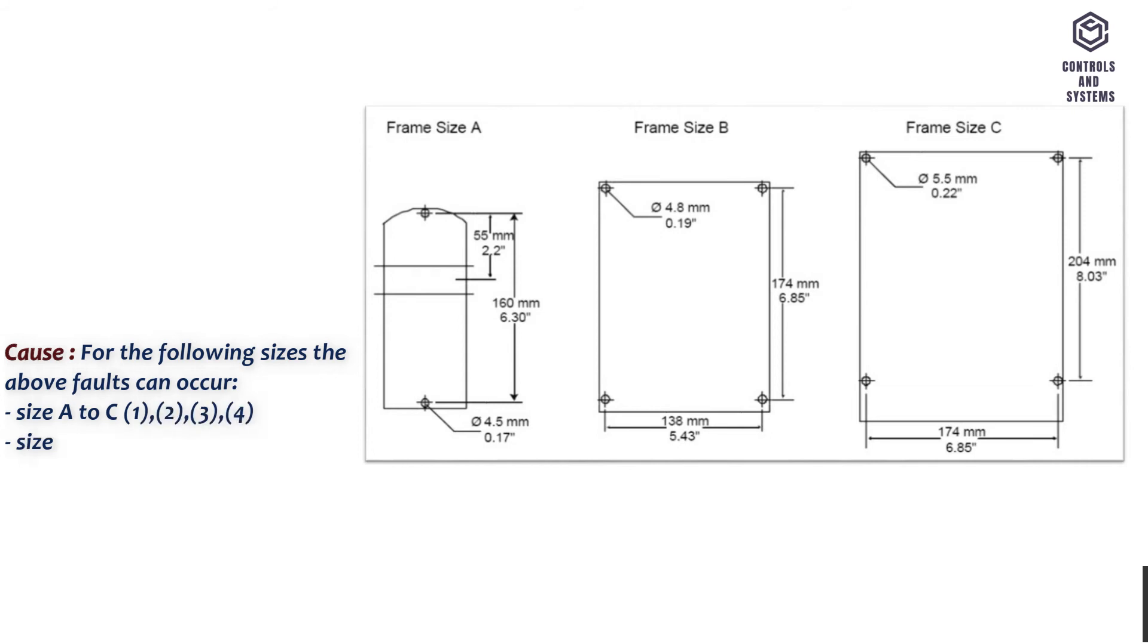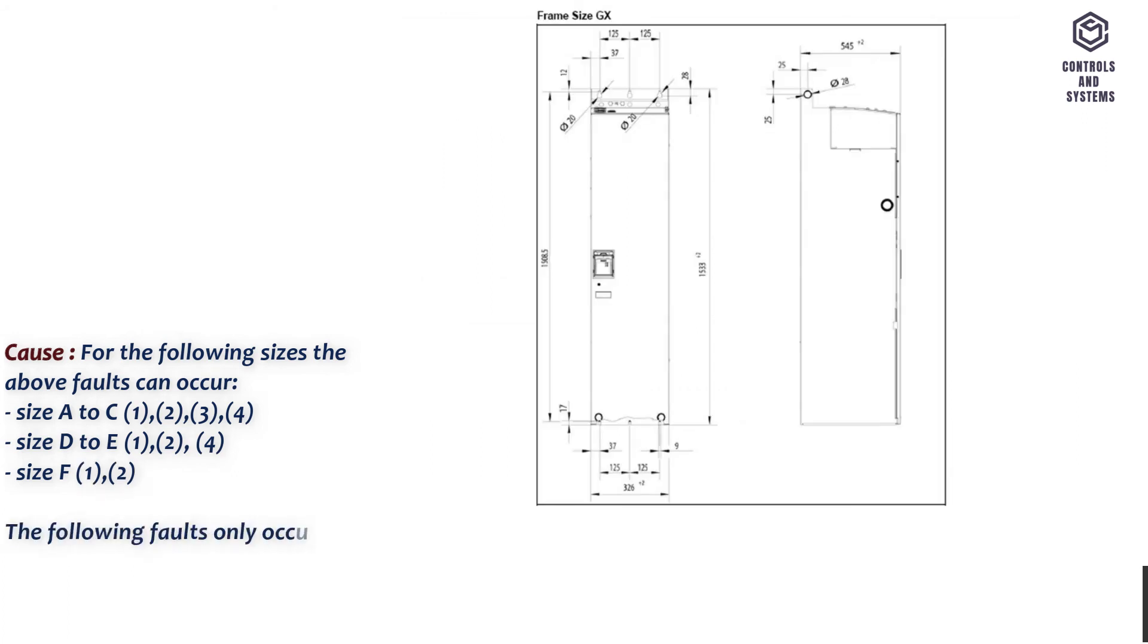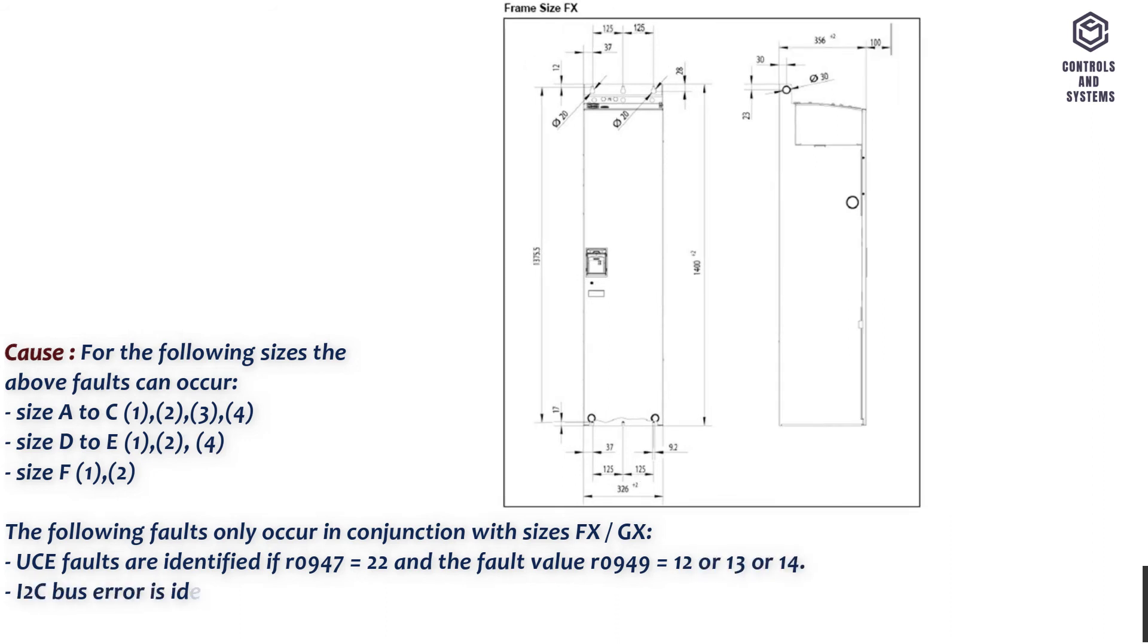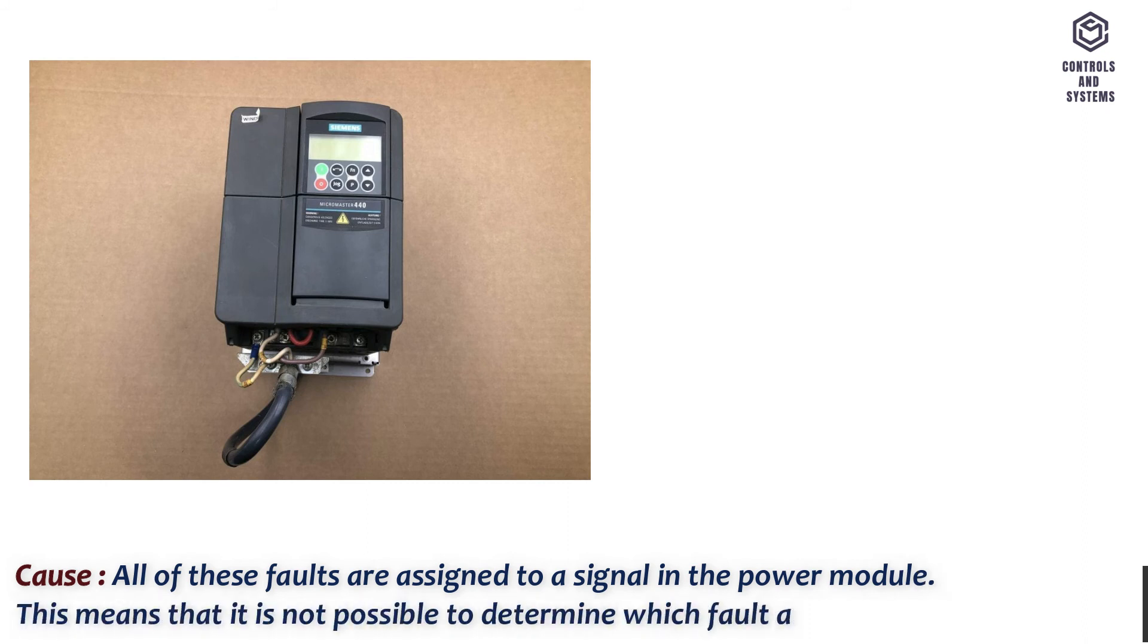Size D to E: 1, 2, 4. Size F: 1, 2. The following faults only occur in conjunction with sizes FX/GX. These faults are identified if R0947 equals 22 and the fault value R0949 equals 12 or 13 or 14. I2C bus error is identified if R0947 equals 22 and the fault value R0949 equals 21. Power down and then power up again. Note: All of these faults are assigned to a signal in the power module. This means that it is not possible to determine which fault actually occurred.